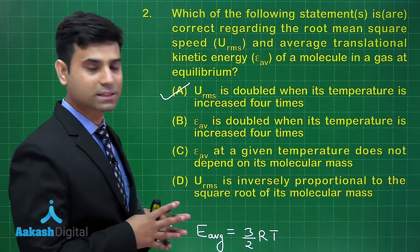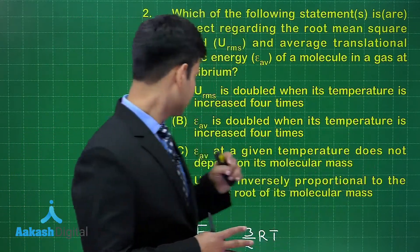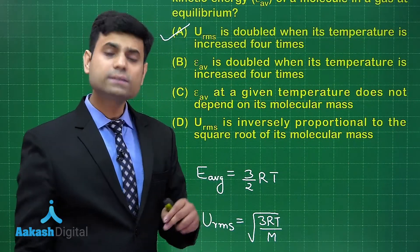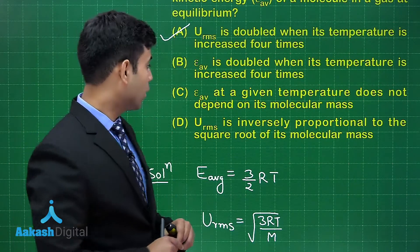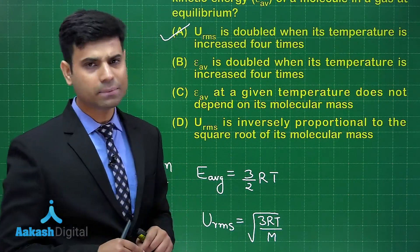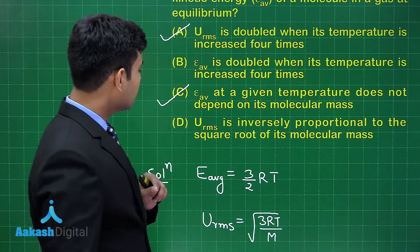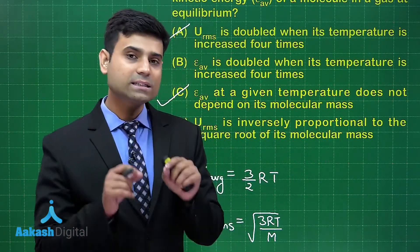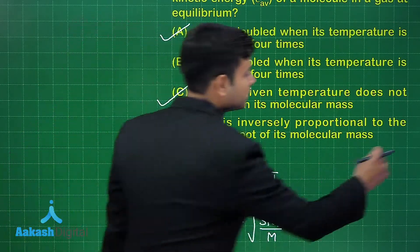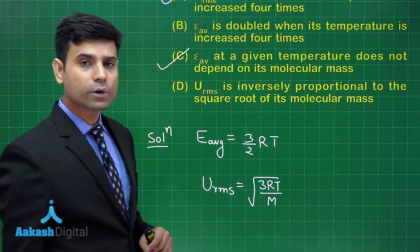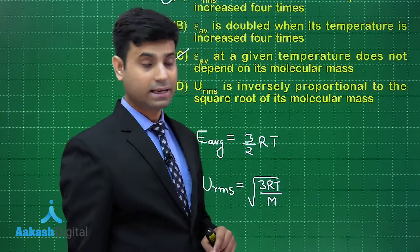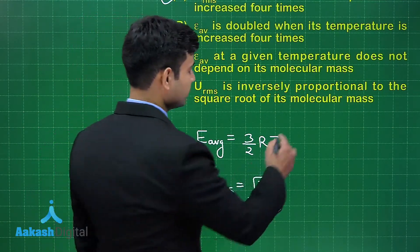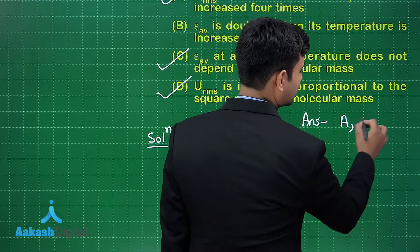Option C says E_avg at a given temperature does not depend on its molecular mass. Looking at the formula E_avg = (3/2)RT, it is independent of molar mass and depends only on temperature. So option C is correct. Option D says URMS is inversely proportional to the square root of its molecular mass — this is correct from the formula. Hence the correct answers are options A, C, and D.